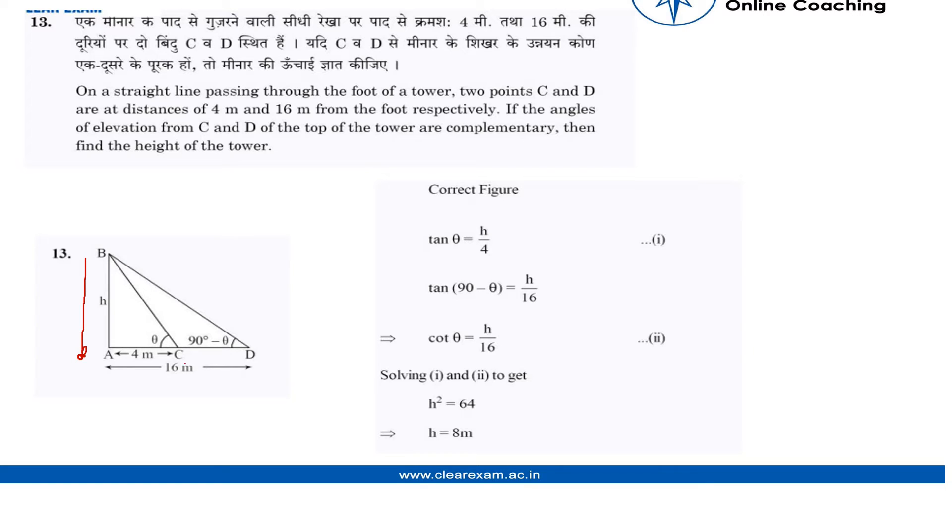If the angles of elevation from C and D of the top of the tower are complementary, then find the height of the tower. So if the angle ACB and ADB are complementary, which means that if one is theta, the other can be taken as 90 minus theta. I hope everyone gets it.